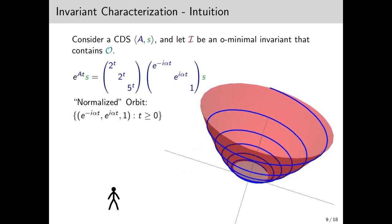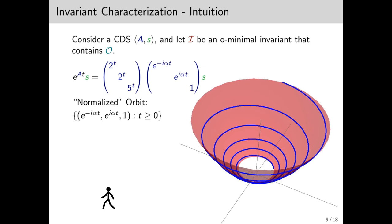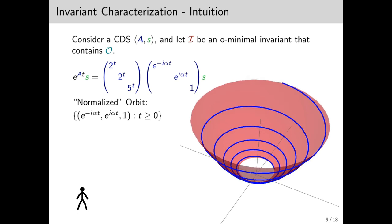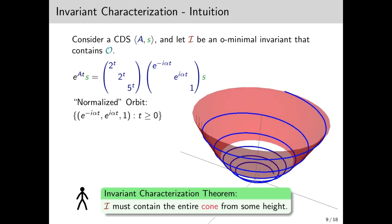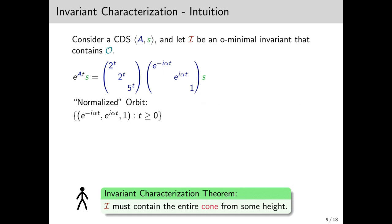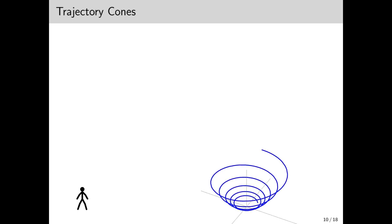Meaning that it should actually contain this entire bowl thingy, which we call a trajectory cone. Note that it's not a cone in the geometrical sense. Well, this is almost true. What we actually prove is that I must contain the entire cone from some height, so it can leave out some bounded bottom.